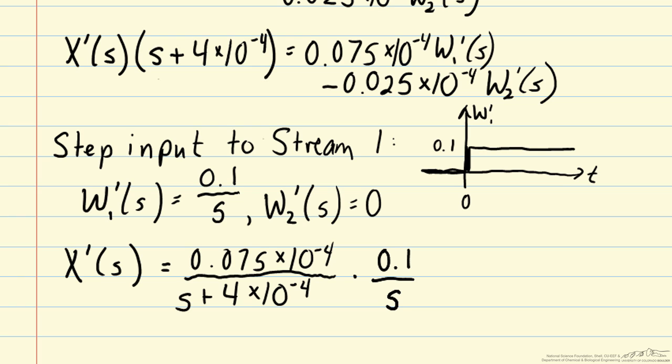And we will also divide through by 4 times 10 to the minus 4. We're going to divide through both sides. And the reason to do that is when we look up transfer functions in a Laplace transform table, we often have them in a particular form. So the denominator here would often be in a form tau s plus 1, not s plus some constant b.